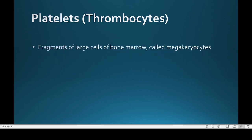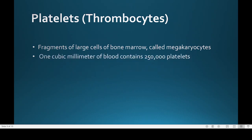Platelets are not cells but are actually fragments of large cells of bone marrow. These fragments are known as megakaryocytes. They do not have any nucleus or any pigment. One cubic millimeter of blood contains 250,000 platelets. Their average lifespan is about seven to eight days, after which they degrade. They help in blood clotting, and the clot serves as a temporary seal at the damaged area.